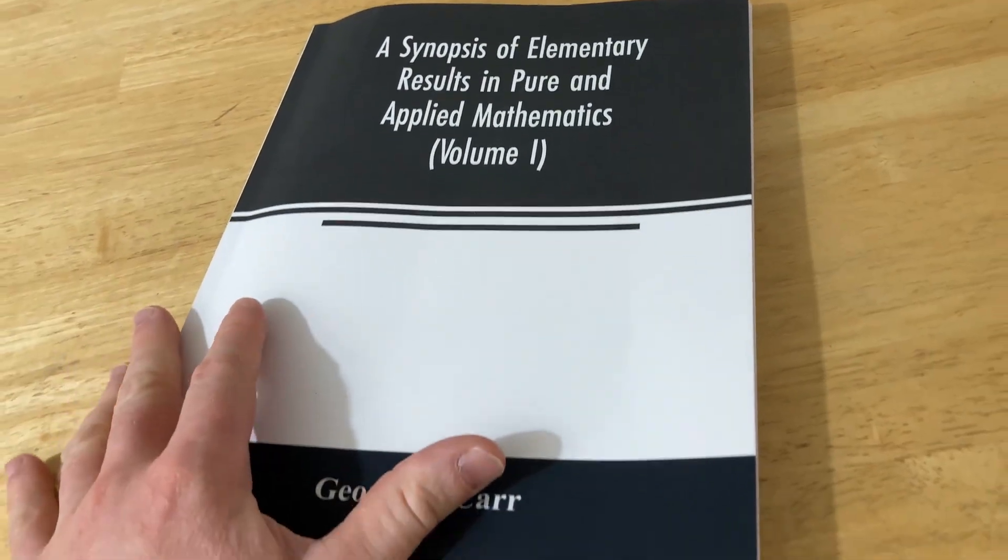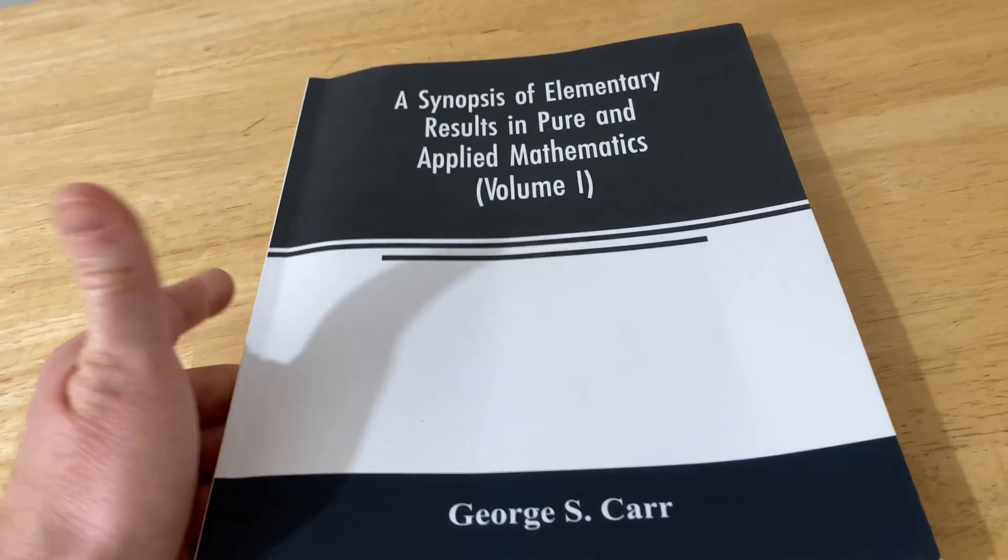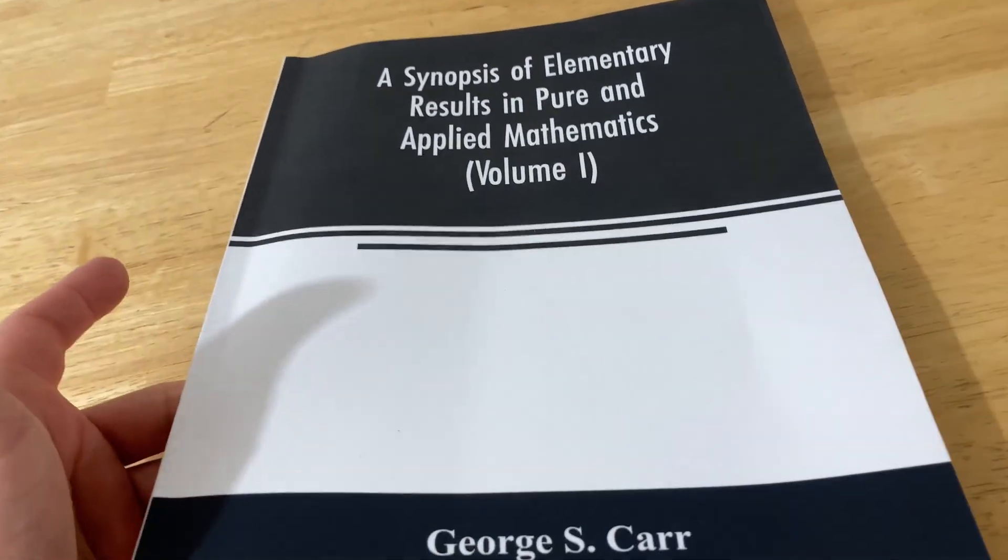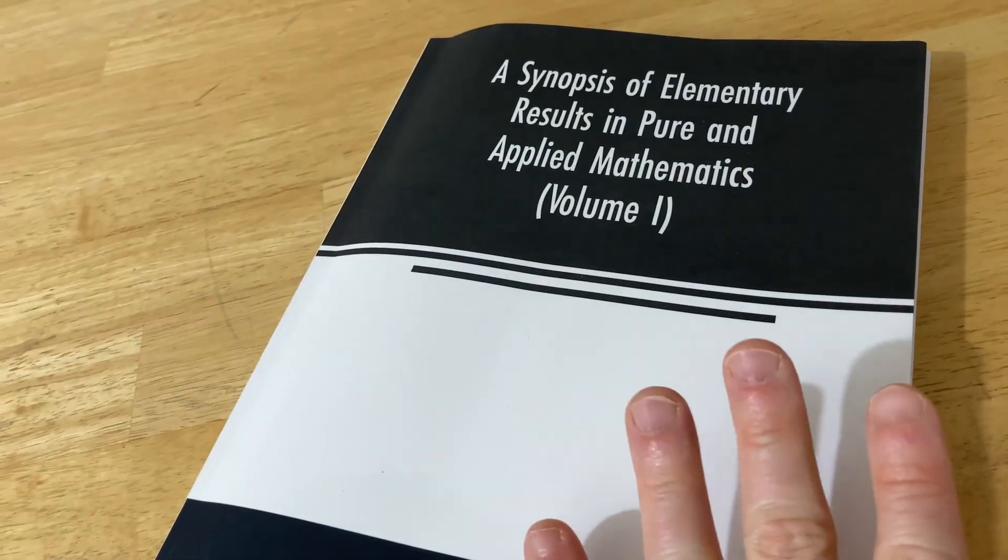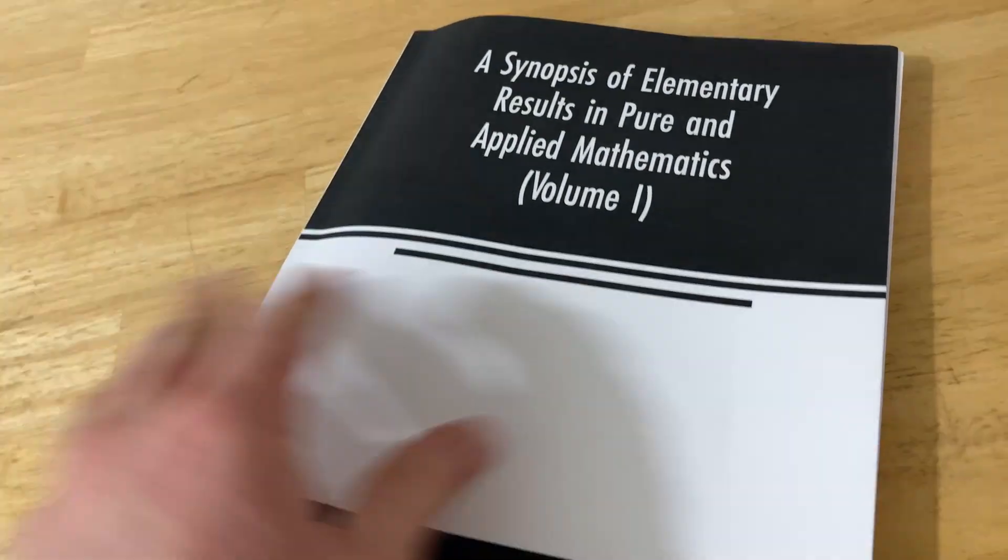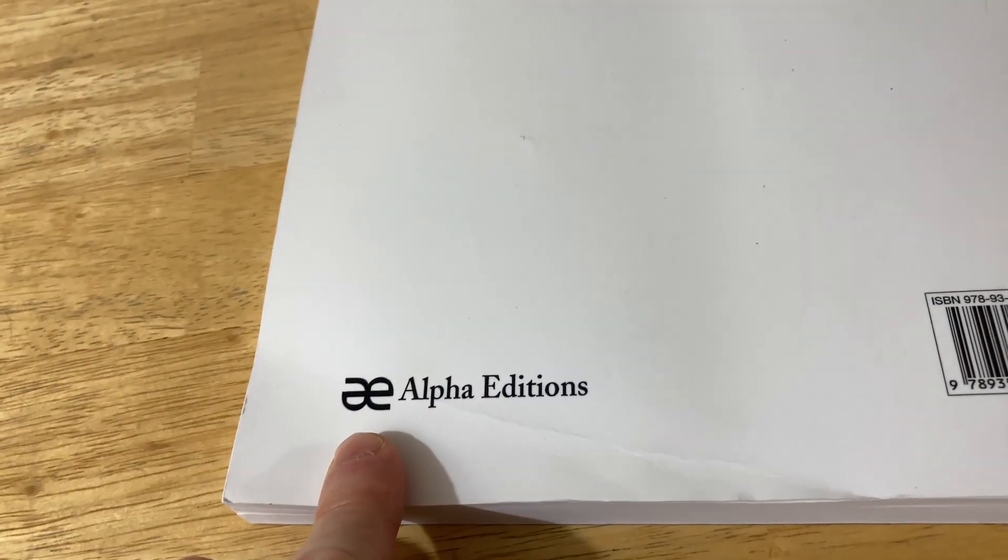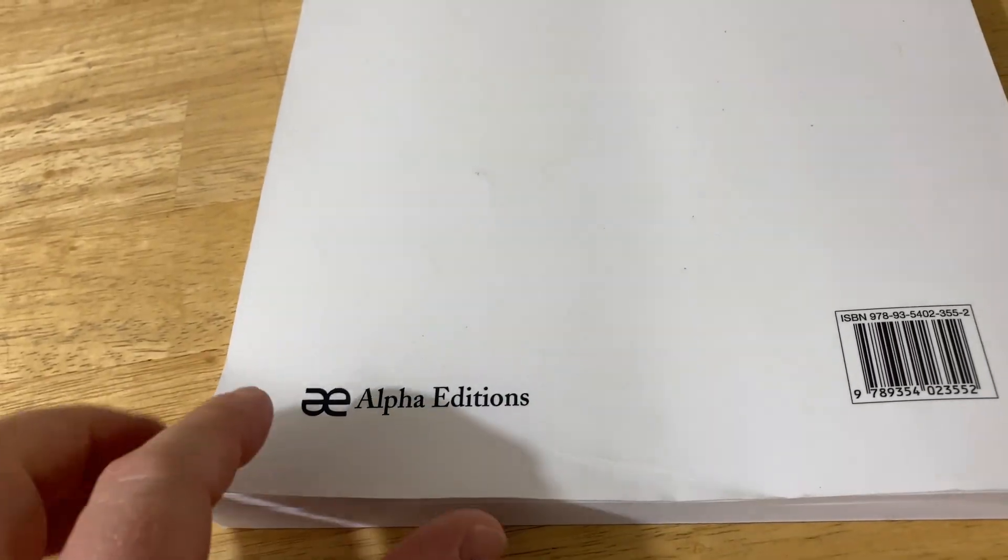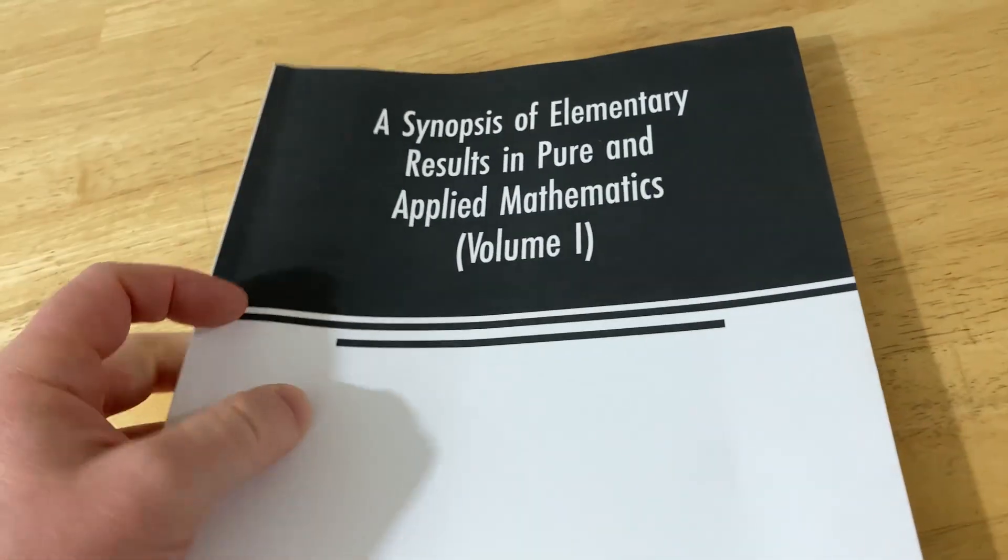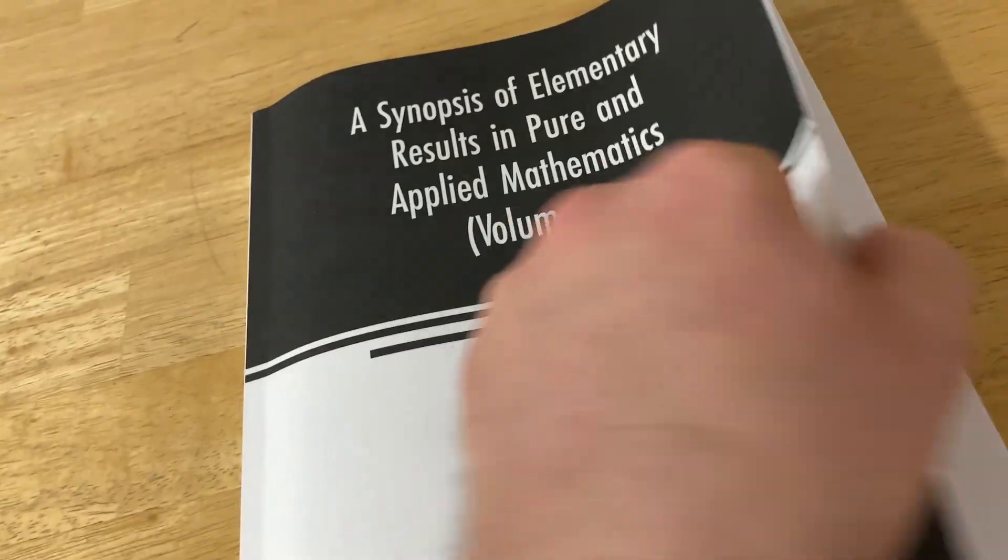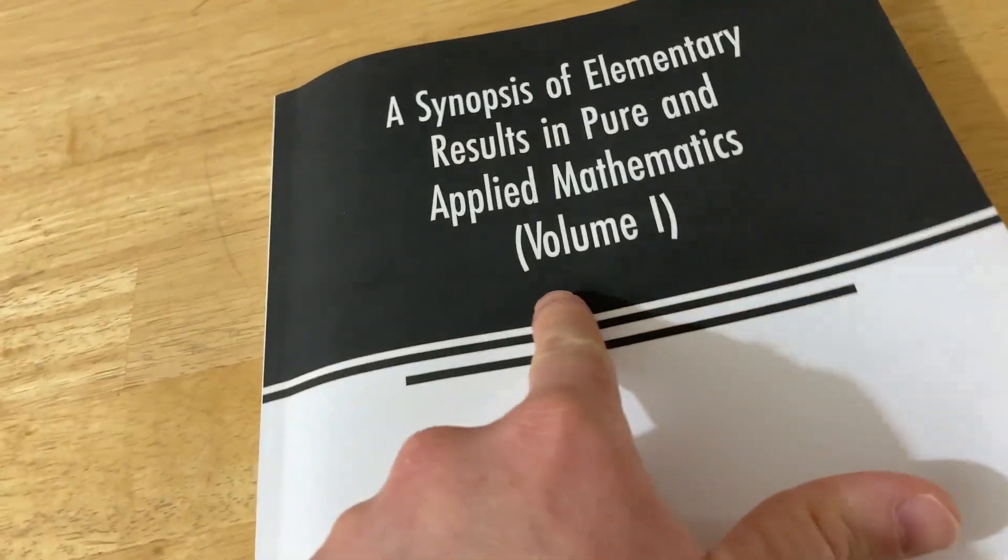I am going to try to find a link to a free copy. I don't know if it exists, but I'm sure it does. So I'll post it in the description. I'll also try to find a link to a print copy. I bought this one very recently, and this one's published by Alpha Editions, but there's different companies or people that reprint these old books. And so you can get a different one reprinted by someone else. And yeah, this is Volume 1. So pretty cool.